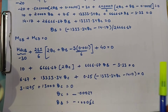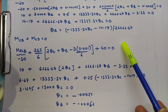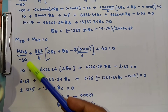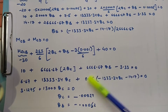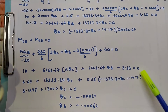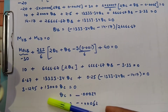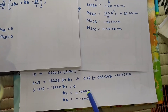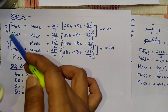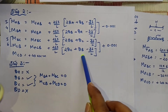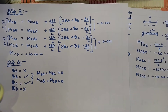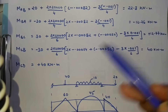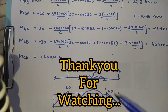We have solved for CB and CD by substituting the fixed end moment, length, EI value, and delta into the equations, and have calculated θC and θB. Now, with the fixed end moments and slopes known, we substitute into the slope deflection equations with delta to find the final moments. We verify that the left-side and right-side moments are equal and opposite, and then draw the bending moment diagram. Thank you for watching.